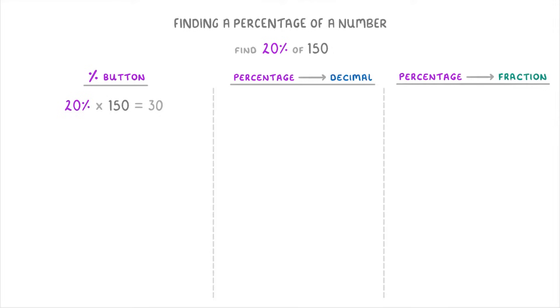To convert a percentage into a decimal, all you do is divide it by 100. So here we'd do 20 divided by 100, which is 0.2. And then to find 20% of 150, we just multiply that 0.2 by 150, which will give us 30 again.